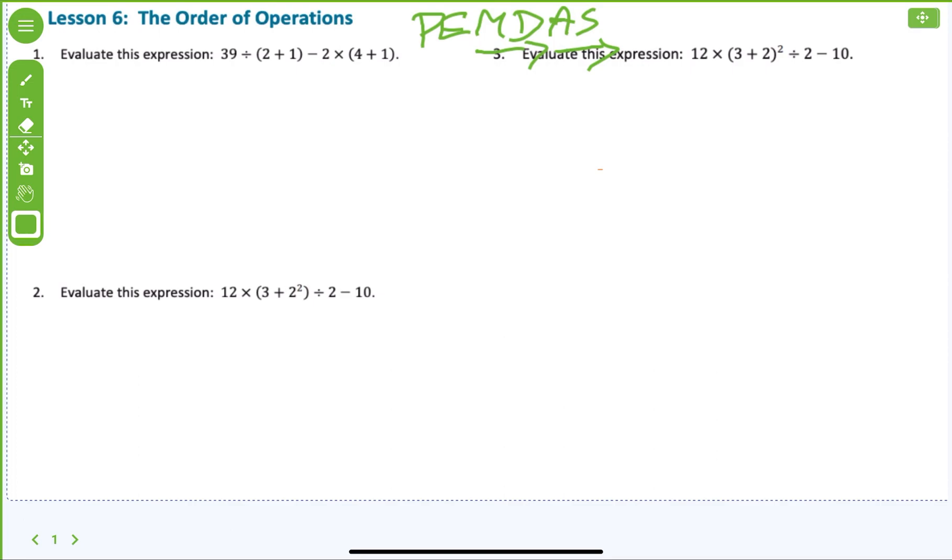Now let's go. For number one, I know that I'm going to start with parentheses because I have two of them that have parentheses. So I'm going to work out 39 divided by what is 2 plus 1, which is 3, minus 2 times what is 4 plus 1? 5. Now I'm done with parentheses.